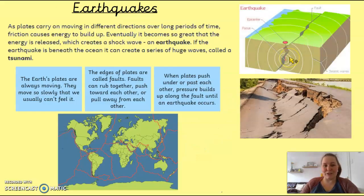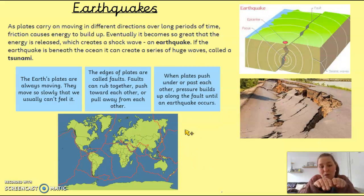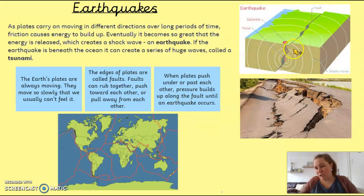Let's first take a look at earthquakes. This is to do with tectonic plates again. As our plates keep moving in different directions, it builds up some friction and eventually the energy is released to create a shock wave — an earthquake. The edges of the plates are called faults, or fault lines, and the fault lines can rub together, push towards each other, or pull away from each other.